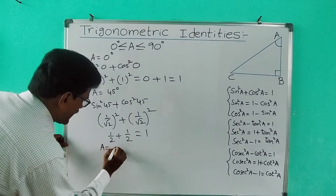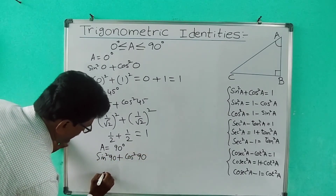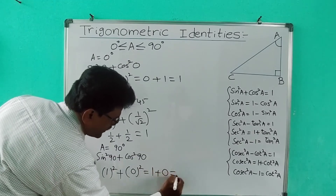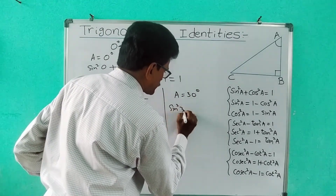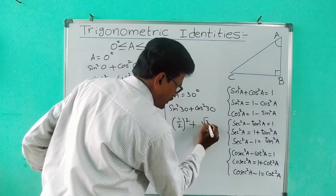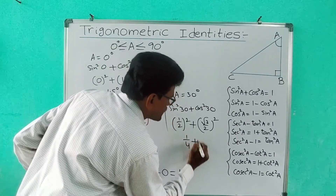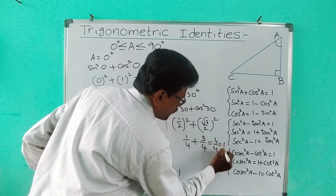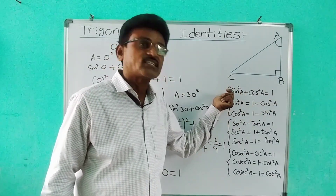For A = 90°: sin²90 + cos²90 = 1² + 0² = 1 + 0 = 1. Again we get 1. For A = 30°: sin²30 + cos²30 = (1/2)² + (√3/2)² = 1/4 + 3/4 = 4/4 = 1. For any value of A from 0 to 90 degrees, we are getting 1. This means sin²A + cos²A = 1 is a trigonometric identity.